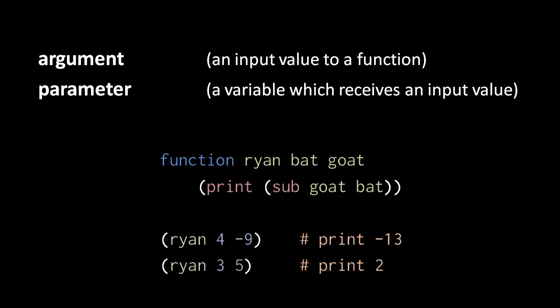So if we then invoke the function with the arguments 4 and negative 9, the value 4 gets passed to the parameter bat, and the value negative 9 gets passed to the parameter goat. And so in the first invocation of this function, when we subtract bat from goat, 4 from negative 9, we get negative 13. And the function will print negative 13.